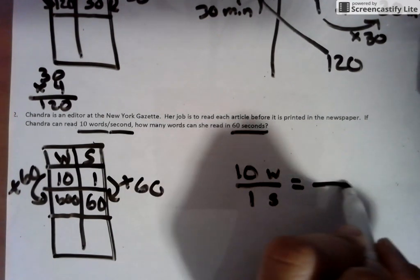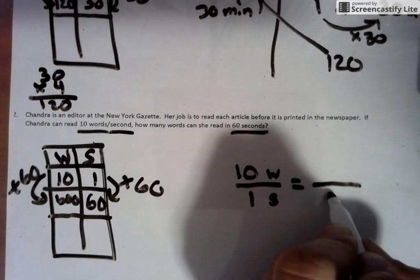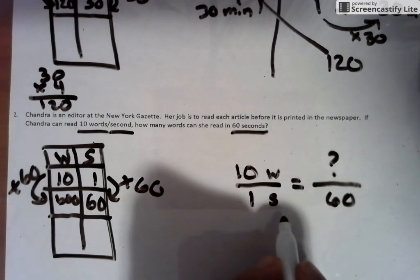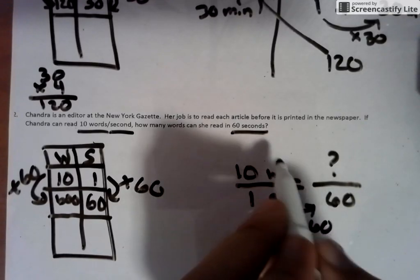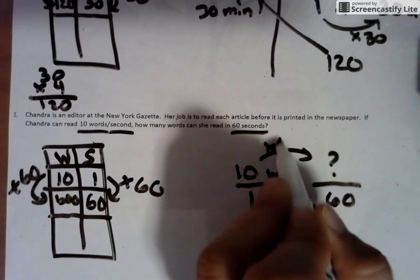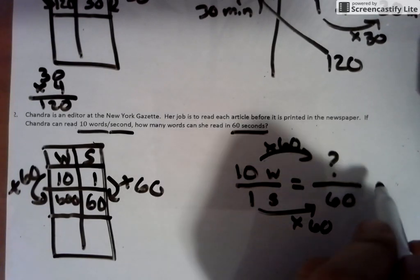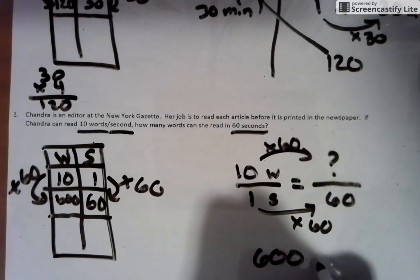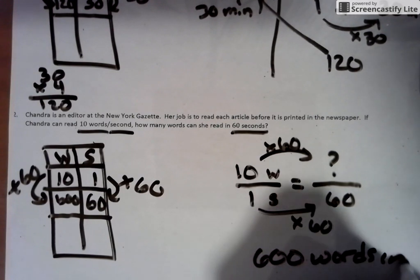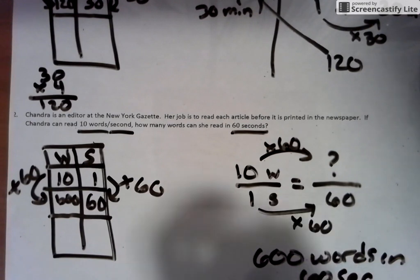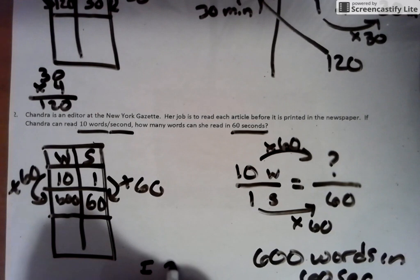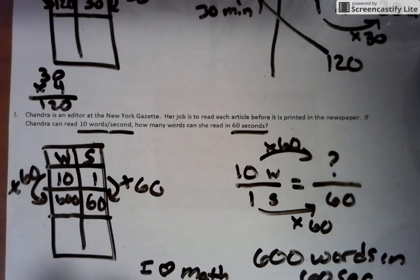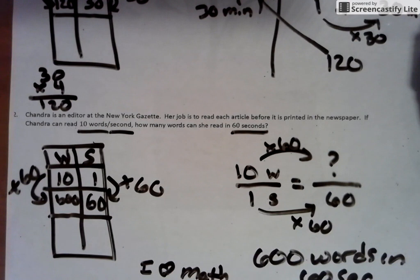So let's check it out as the beginning steps of a proportion. The first rate we are given is 10 words per second. So if we had 10 words per second, the last piece of information they gave us was seconds. So we got to put that on the bottom and the mystery piece once again is the top. How do we get from one to the 60? We times by 60. So whatever we do to the denominator, we do to the numerator. We times that by 60. 10 times 60 is 600. So 600 words in 60 seconds.